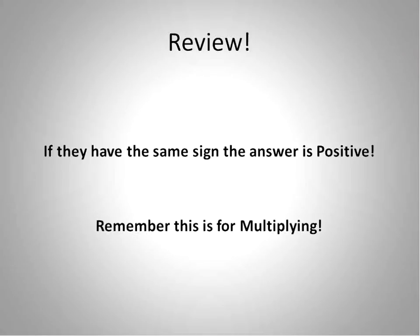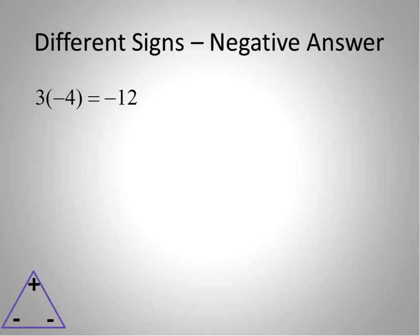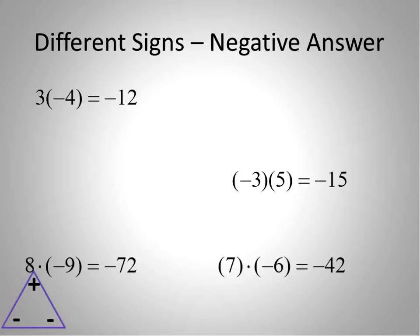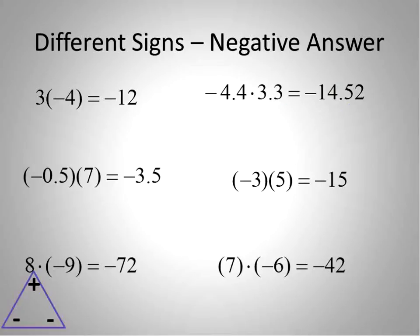Quick review: if they have the same sign, the answer will always be positive. Remember, this is for multiplying only. Now, what happens if the signs are different? Like a positive 3 and a negative 4 — if the signs are different, you're going to get a negative answer. It doesn't matter what order it's in. When the signs are different, you get a negative answer. This works for positive and negative numbers, decimals, and fractions as well.